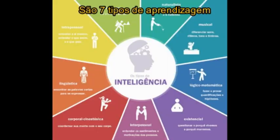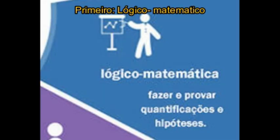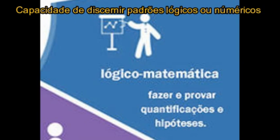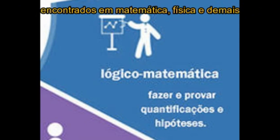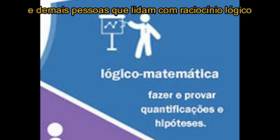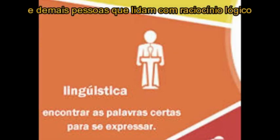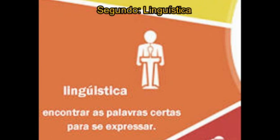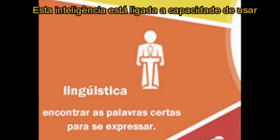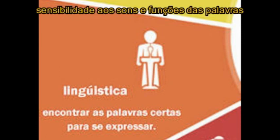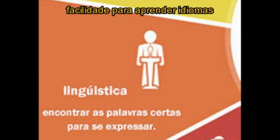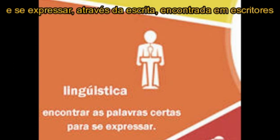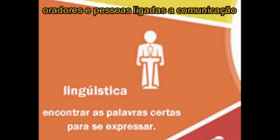São sete tipos de aprendizagem. Primeiro, lógico-matemática: capacidade de discernir padrões lógicos ou numéricos e lidar com longas cadeias de raciocínio, encontrada em matemáticos, físicos e demais pessoas que lidam com o raciocínio lógico. Segundo, linguística: inteligência ligada à capacidade de usar as palavras oralmente ou verbalmente, com sensibilidade aos sons, funções das palavras, uso da linguagem e transmissão de ideias. Facilidade para aprender idiomas e se expressar através da escrita, encontrada em escritores, oradores e pessoas ligadas à comunicação.